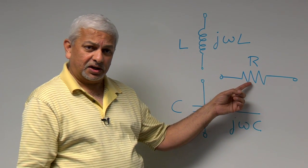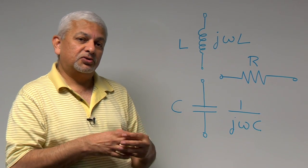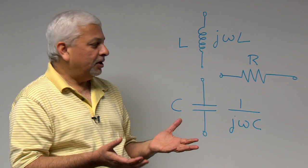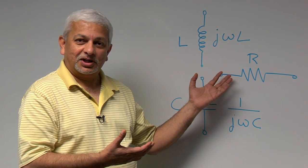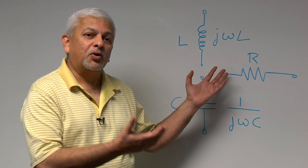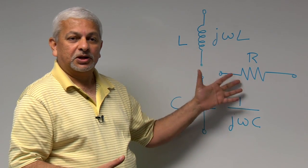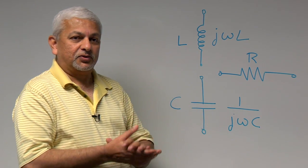A resistor, on the other hand, if you try to push current through that, like the name says, it resists the flow of current. So why would you want to use a resistor? If something is going to oppose the flow, why would you want to use that? Well, we have very useful applications for that.